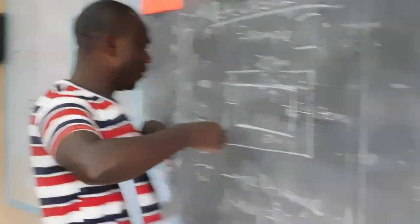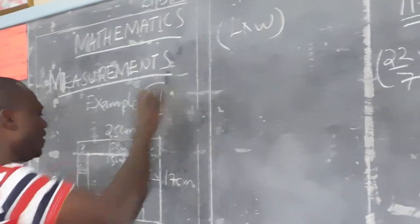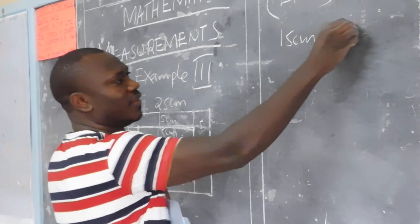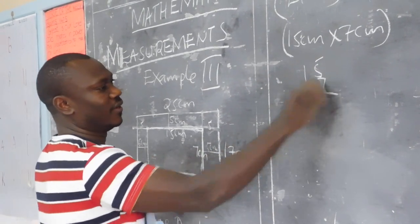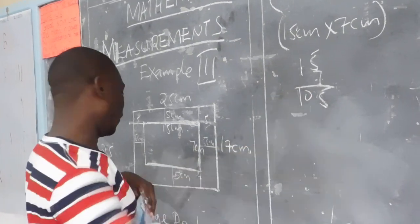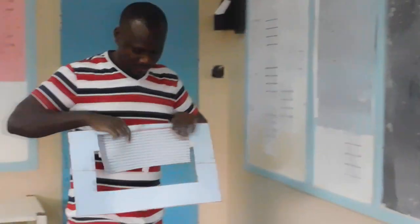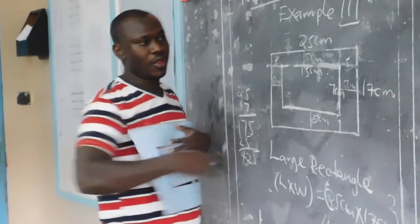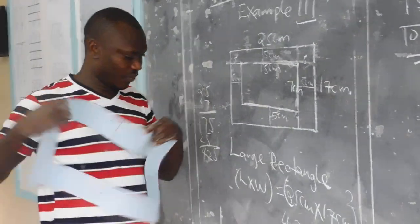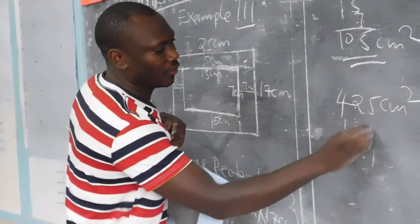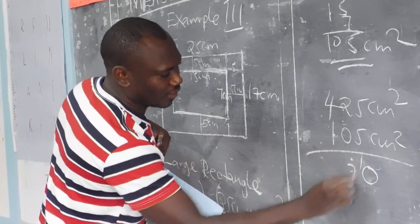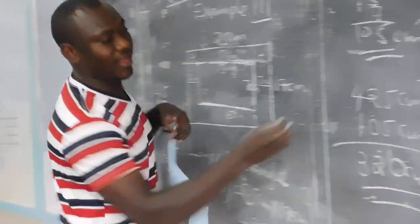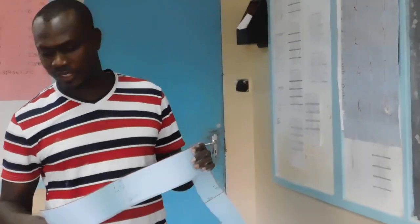We also get the area of the shaded inner rectangle: length by width is 15 cm by 7 cm, which gives us 105 square centimeters. Because the whole figure is 425 square centimeters, we subtract the shaded part: 425 minus 105 equals 320 square centimeters. Therefore, the area of the unshaded part is 320 square centimeters.